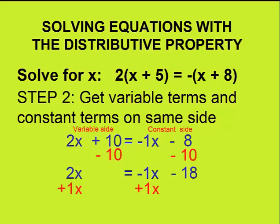To eliminate minus 1x, we will add 1x to both sides, leaving us with 3x's on the left-hand side, and just negative 18 on the right-hand side.